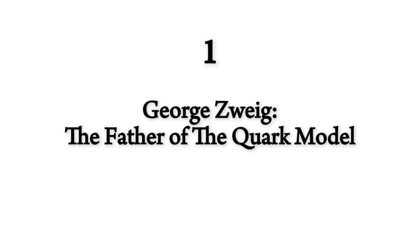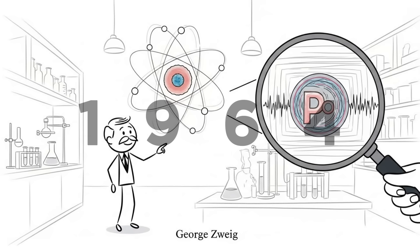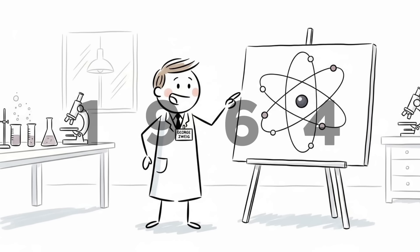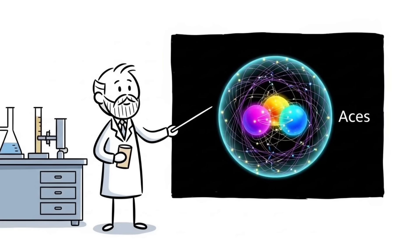Number 1. George Zweig, the father of the quark model. In 1964, physicist George Zweig said that protons and neutrons weren't the smallest particles. They were made of even tinier things he called aces, which is now known as quarks.